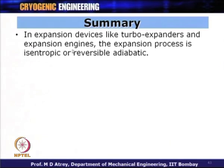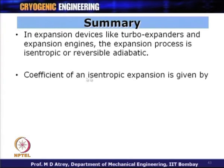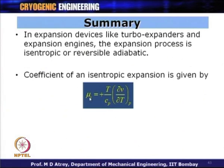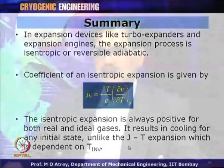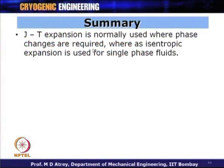In expansion devices like turbo expanders and expansion engines, the process is isentropic or reversible adiabatic. The isentropic expansion coefficient mu_S equals (T/C_P)(del V/del T)_P, which is always positive for both real and ideal gases. Therefore, one need not worry about inversion temperature for isentropic expansion — it results in cooling for any initial state, unlike JT expansion.